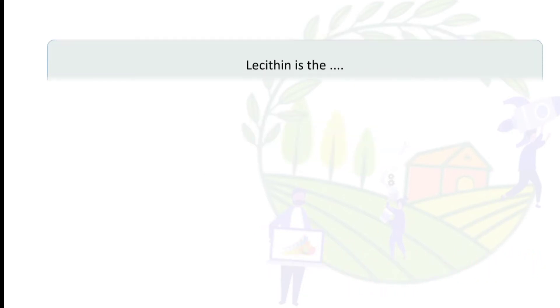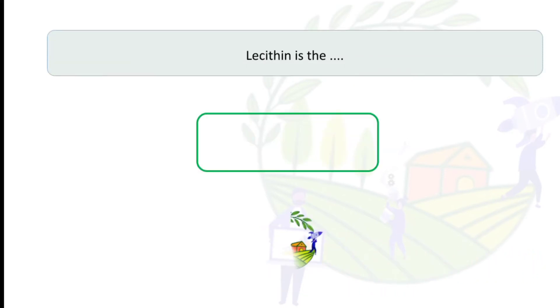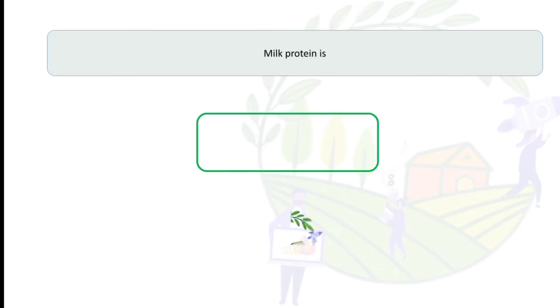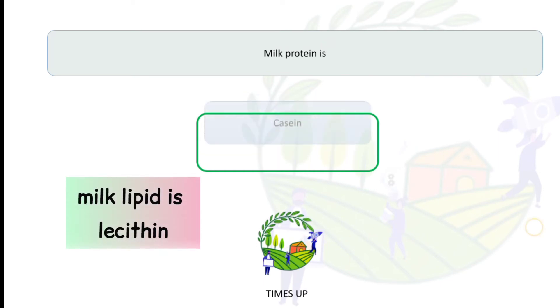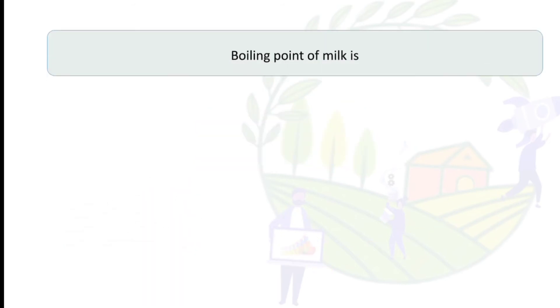Lecithin is a milk lipid, and the milk protein is casein. So milk protein is casein and milk lipid is lecithin.